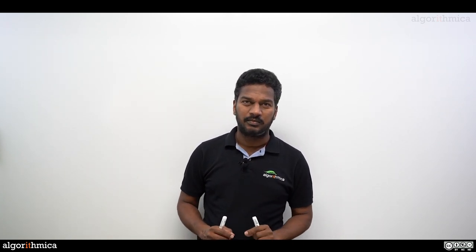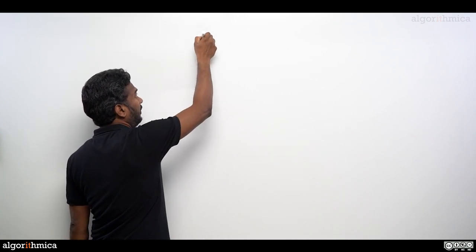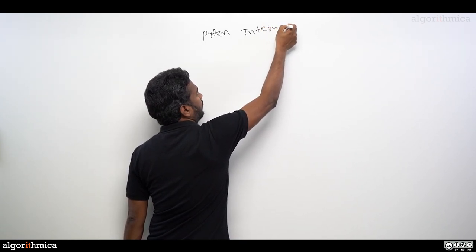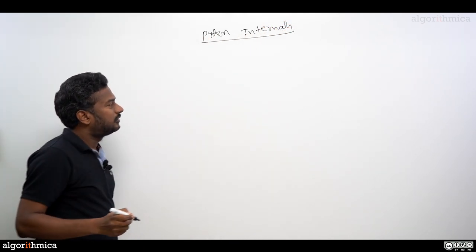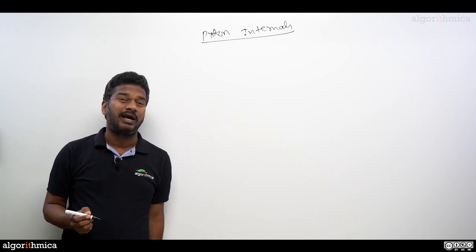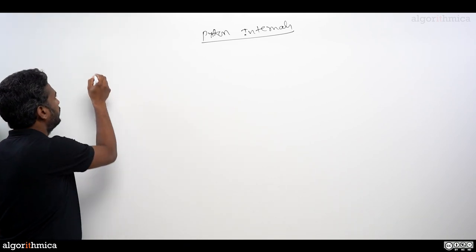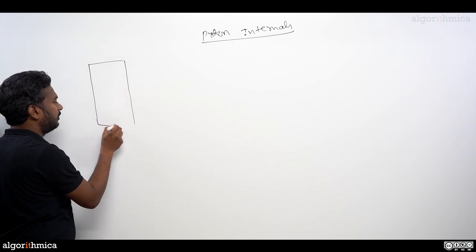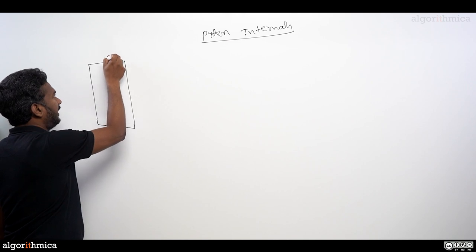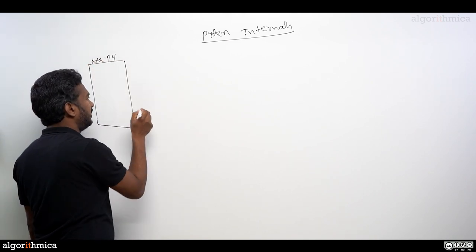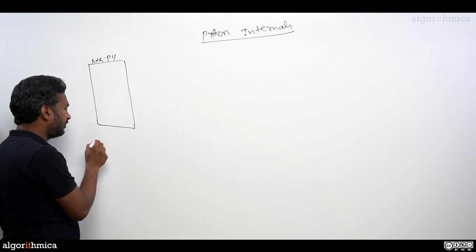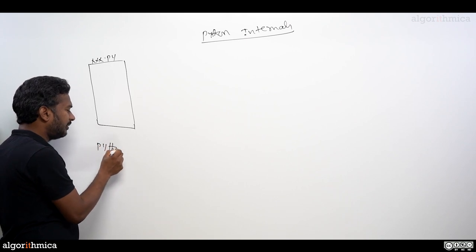We are going to spend a good amount of time going very deep into Python internals. First, let's look at the high-level picture of what happens when you run your Python program. From the end user point of view, we take a .py Python program — let's say xxx.py — and we execute it. The command we normally use is simply the python command followed by the filename xxx.py.